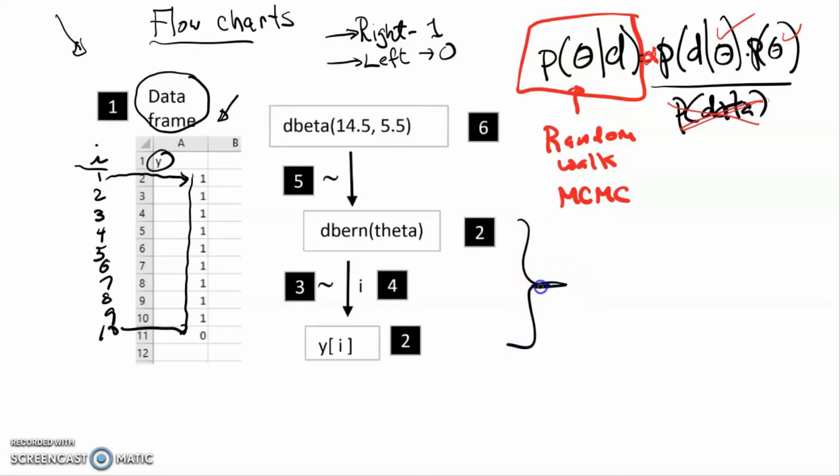So what we've done here, this part corresponds to this part here. This is our likelihood function. The data are assumed to have arisen from a Bernoulli distribution with some value theta.